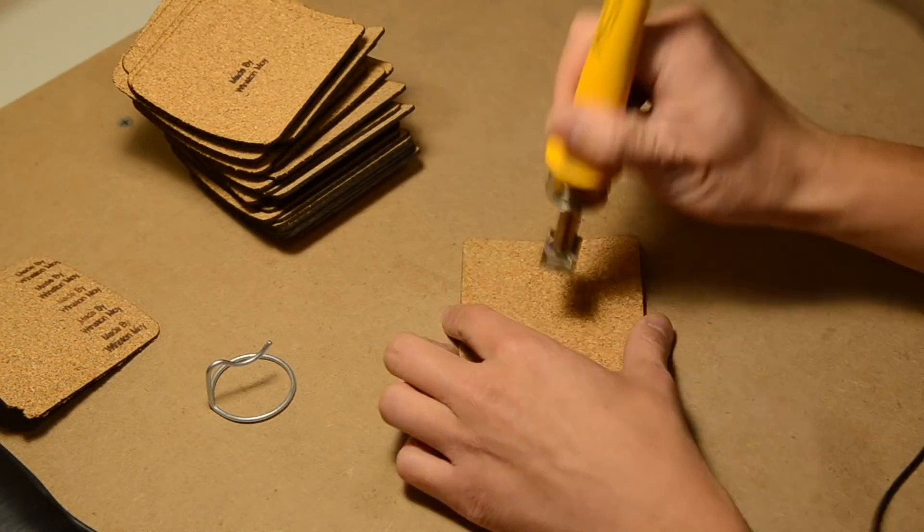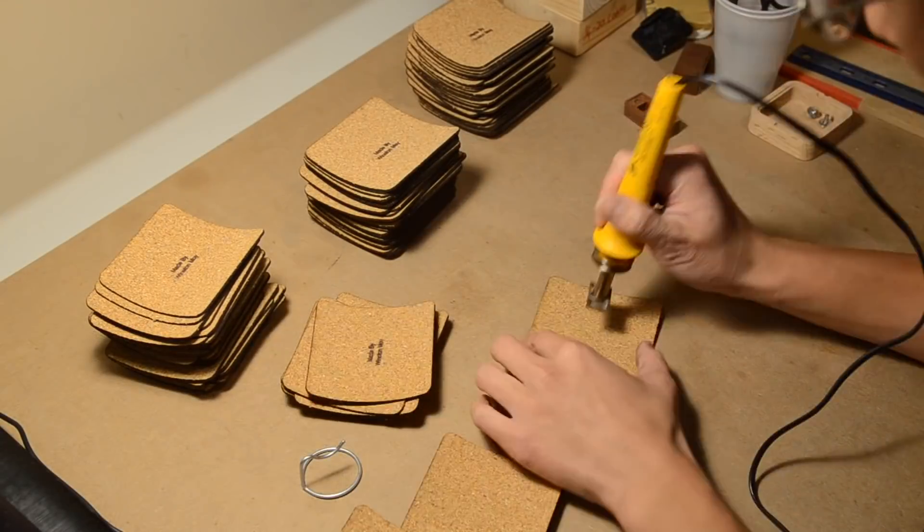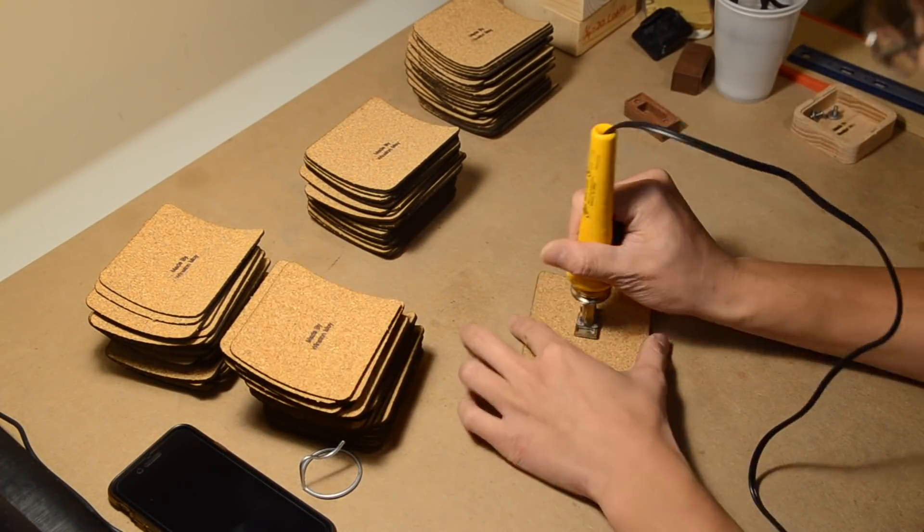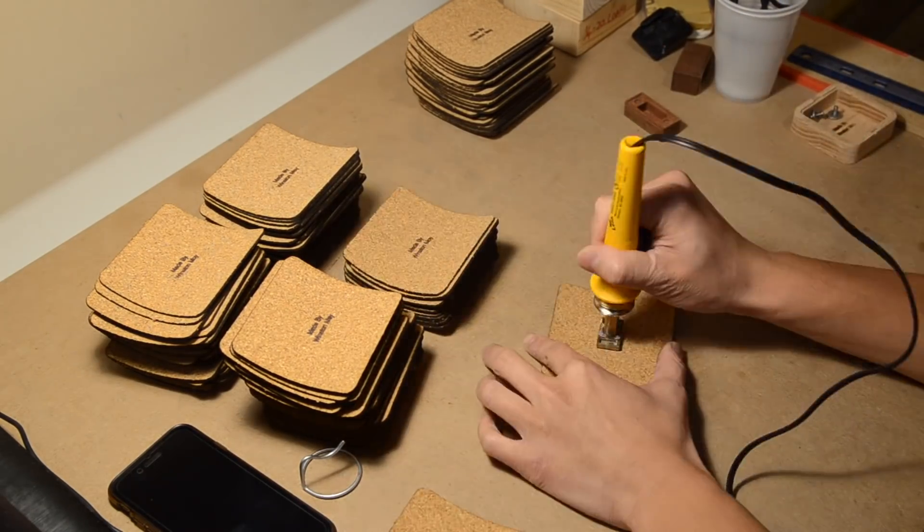When I got home, I set up my branding iron and marked the backs of each cork piece. As with the previous tasks on the belt sander, it takes a small amount of time to dial in your hand-eye coordination to repeat each action quickly and effortlessly.